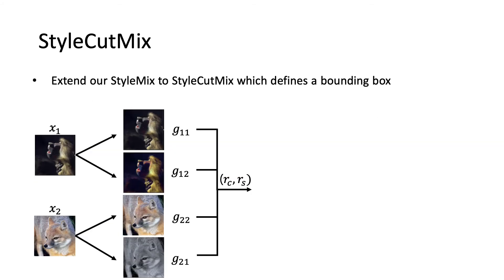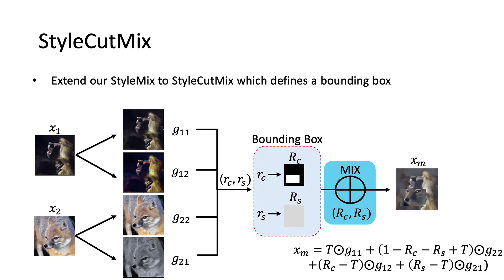We then evolved StyleMix into StyleCutMix, which utilizes a bounding box. The biggest difference from StyleMix is that the content ratio is replaced by the size of the bounding box.